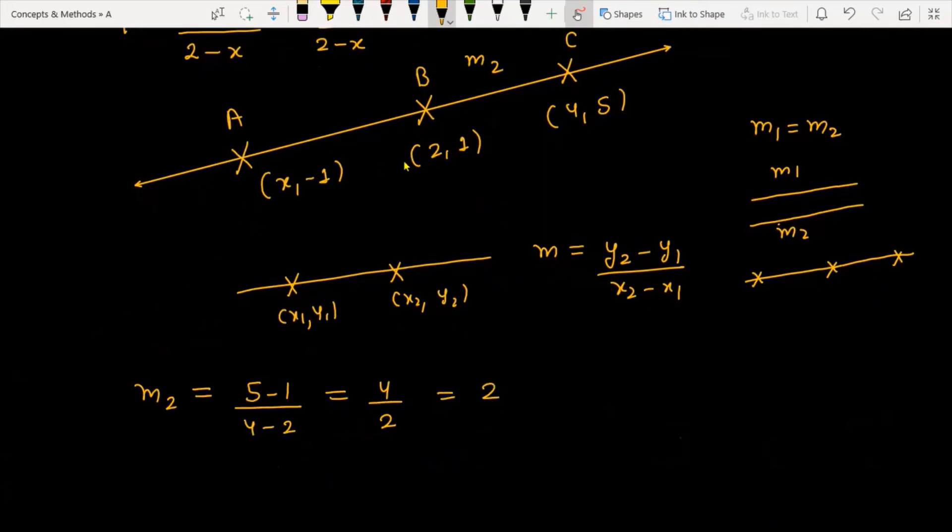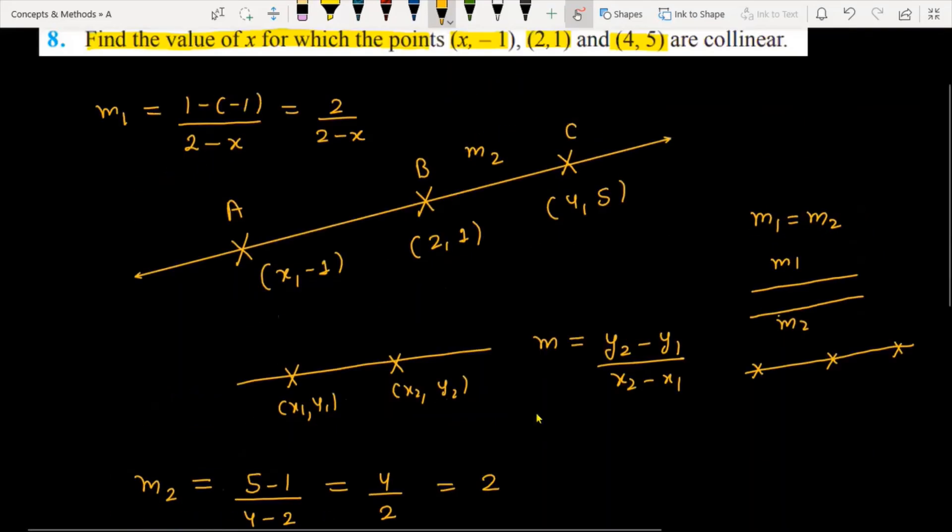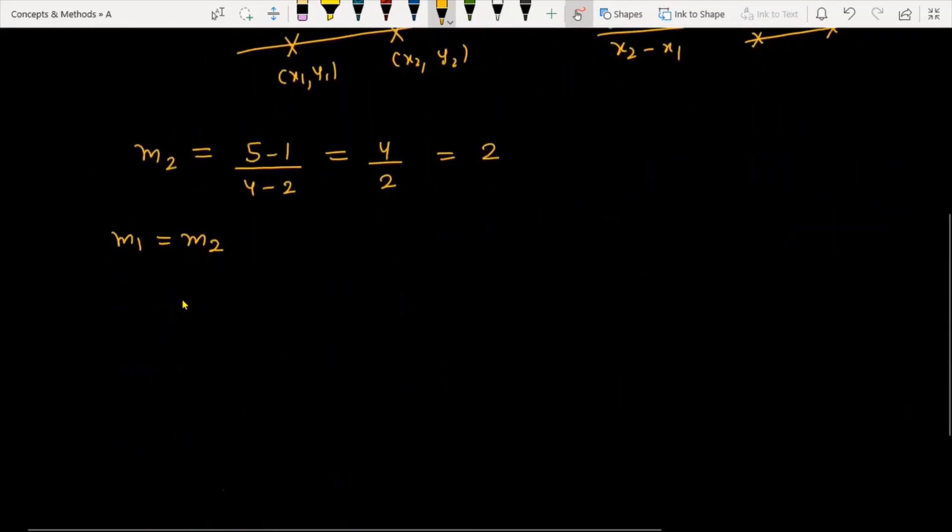Now, I told you that three points are collinear, so m1 must equal m2. We have m1 = 2/(2 - x), and this must equal 2. Now we simplify: 2/(2 - x) = 2, which gives us 1 = 2 - x, or x = 1.